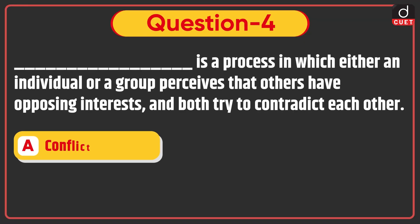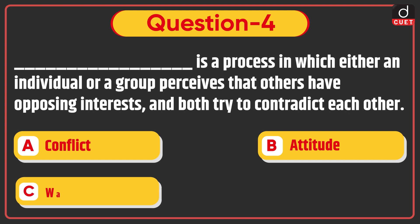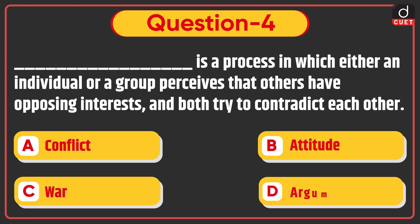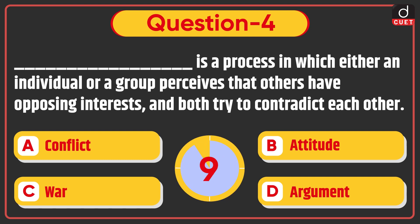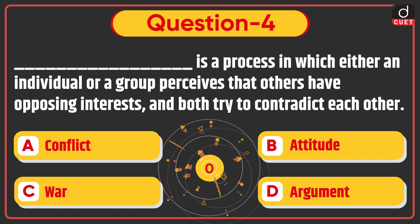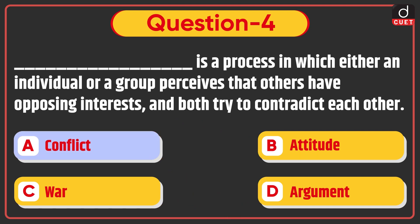Next question: This is a process in which either an individual or a group perceives that others have opposing interests and both try to contradict each other. — Conflict, Attitude, War, or Argument? The correct answer is Option A, Conflict.